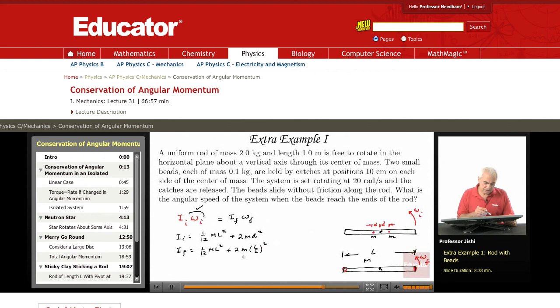Keep in mind that this is big M, that's the mass of the rod, and this is little m, that's the mass of the bead. Now, we have everything we need.